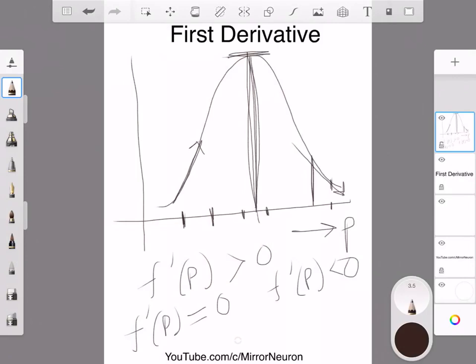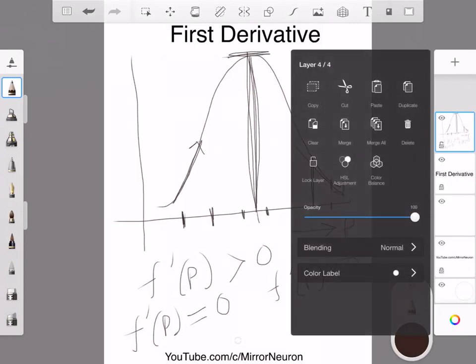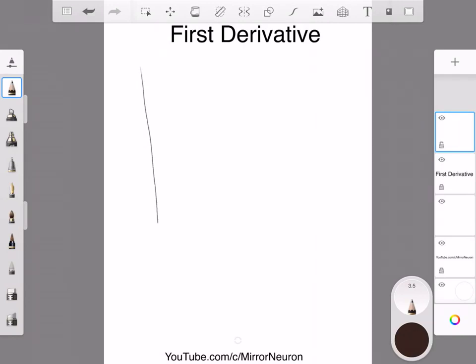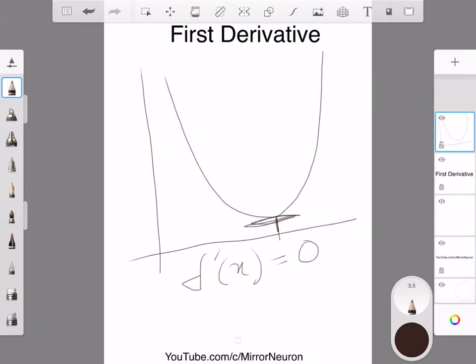Now, does it always mean that the derivative will be 0 corresponding to the most high value? No, because your graph might also look something like this, and here also, at this point, your derivative of your function can be 0, that means this is the minimum value.